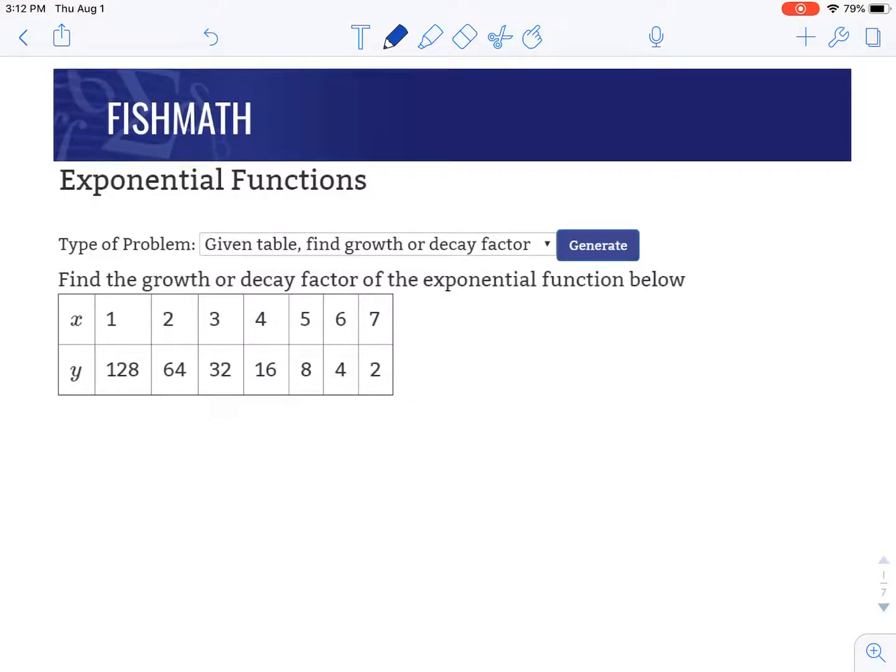So for the first one here, as x goes up by 1, we're going to look to see what happens with the y values. So 128 times something is 64, and then 64 times that same thing is 32, and then 32 times that same thing is 16.